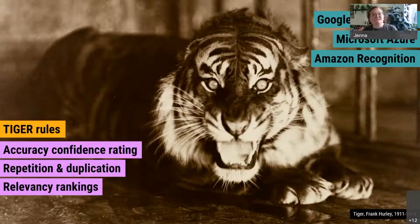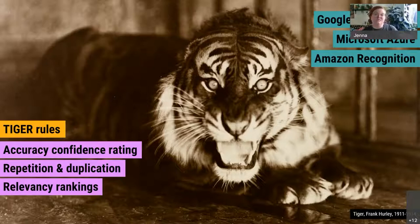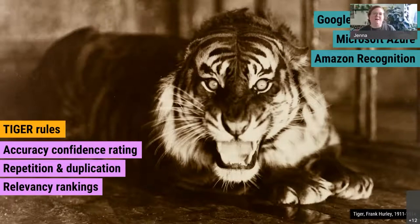The Tiger component is actually our custom algorithm that sits over the top of those services — it's effectively our built-in QA system. The Tiger component analyzes all of the raw data that we get from the three different services and tries to identify the most relevant and most accurate terms. We only deliver the Tiger tags to the user, not the full raw list. The algorithm is a rules-based approach that looks at things like confidence level ratings across the data we receive.